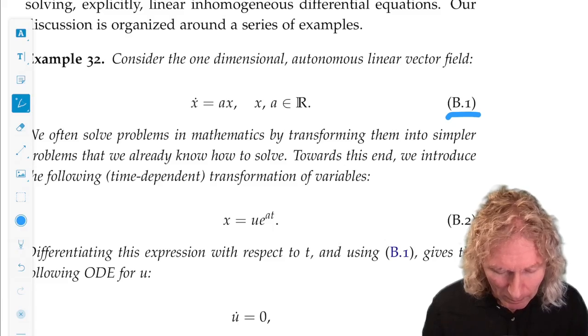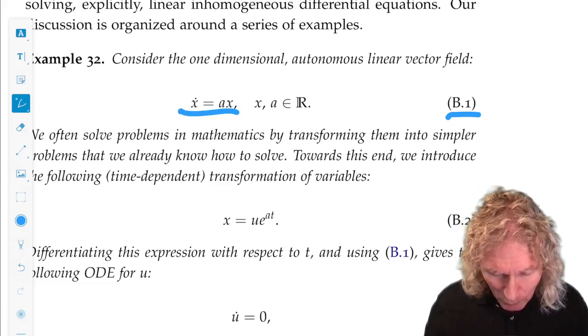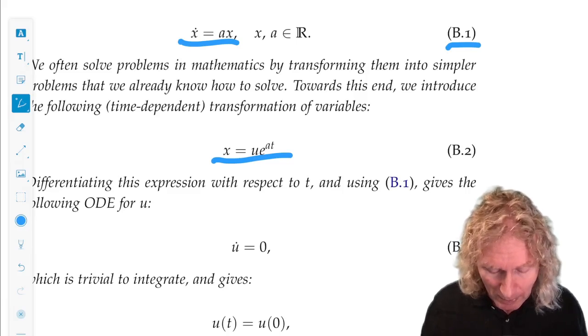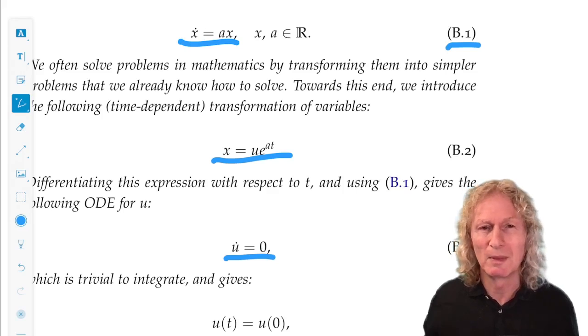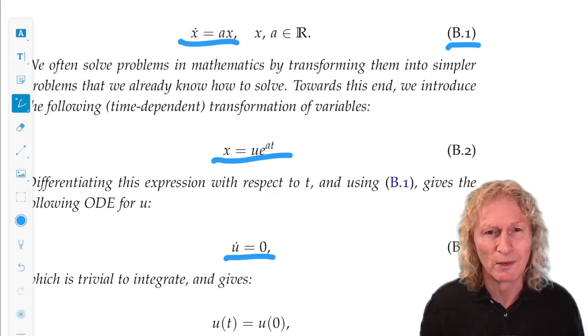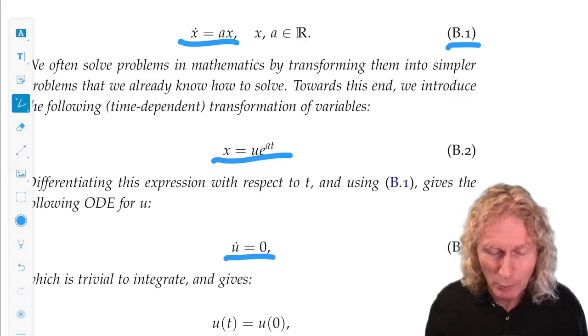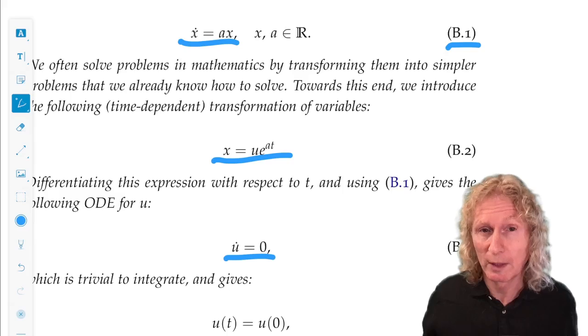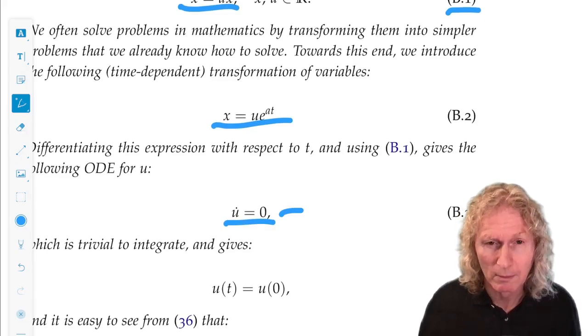So for this vector field, we're going to change variables from X to U, a time-dependent transformation. Let X equal U times e to the AT. If you substitute that in the equation, you can easily verify that U dot equals zero. In some sense, this is the goal for any technique of differential equations, reduce it to X dot equals zero, even in many dimensions.